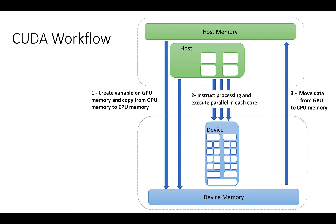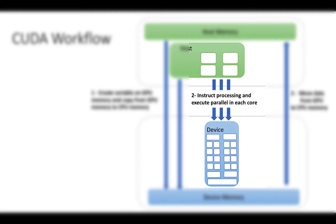We saw in the previous lecture that the CUDA workflow consists of three phases and provides a guide in developing applications to run on GPUs. In the previous lecture we focused on the first and the third phases of the CUDA workflow. In this and the next lecture we focus on the second phase — we will learn how to define and execute a function to run on the GPU cores.